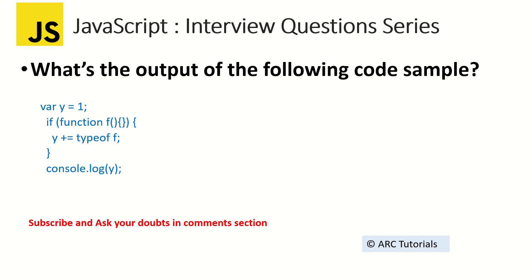Let's see if you understand this code. First, we are declaring a variable y and assigning a value of 1. Then we have an if condition where we have defined a function — it's an empty function. Then we are writing y plus equals typeof f, and then we are console logging y. Take 10 seconds, read the code correctly. These are the kind of questions you will mostly get when attending front-end engineering role interviews. Just go line by line and you will find yourself answering this question very simply.